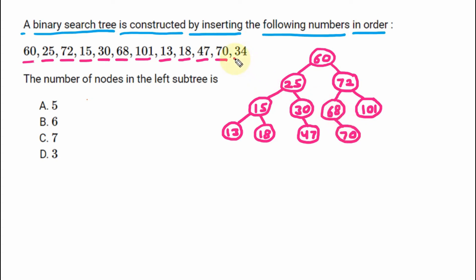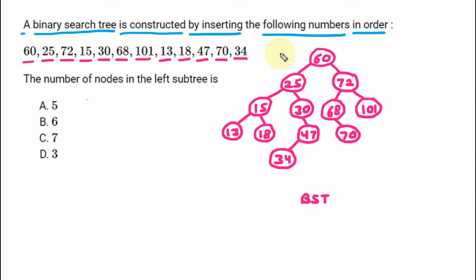Next value is 34. 34 is less than 60 but greater than 25, greater than 30, but less than 47, so on the left branch of 47 we have 34. So here we have constructed the BST — binary search tree — which follows the property that on any node, the left hand side has the smaller value and the right hand side has the greater value.